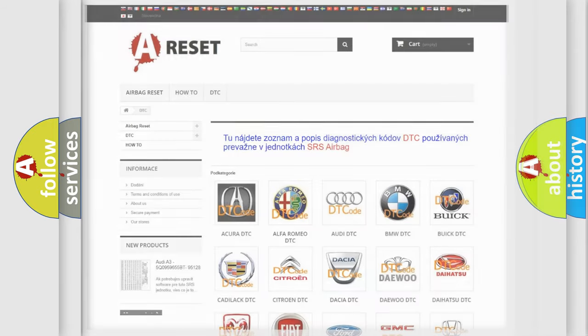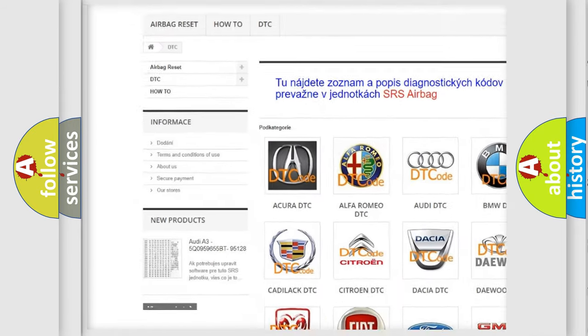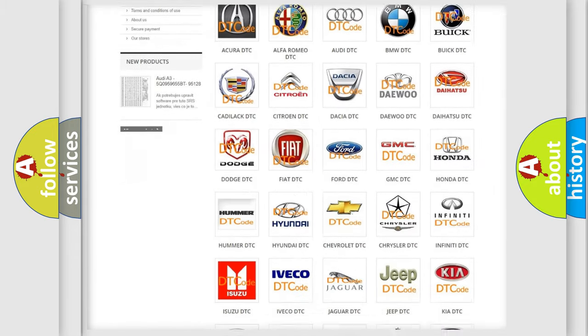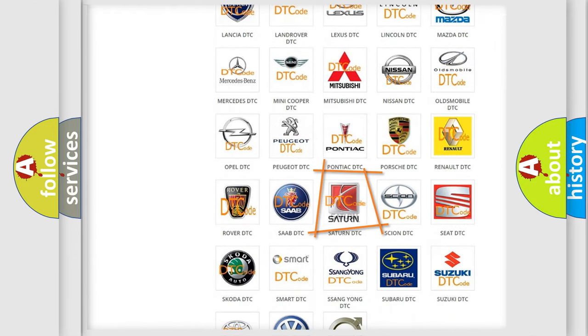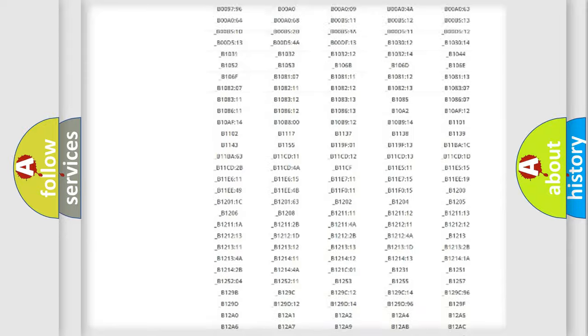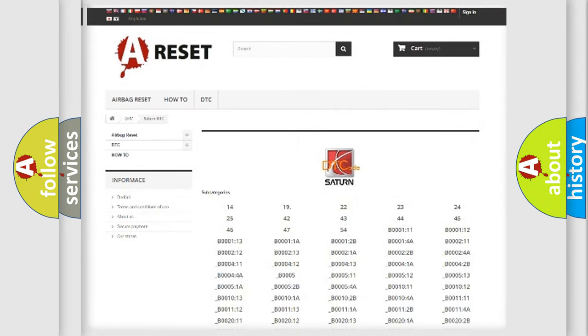Our website airbagreset.sk produces useful videos for you. You do not have to go through the OBD2 protocol anymore to know how to troubleshoot any car breakdown. You will find all the diagnostic codes that can be diagnosed in Saturn and vehicles, and also many other useful things.